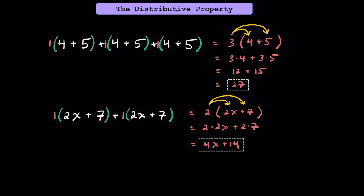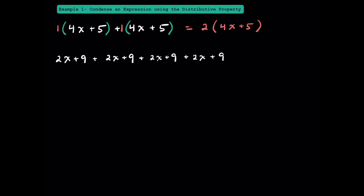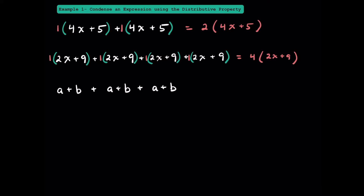Now that you have some background on the distributive property, let's get into some examples. In example 1, we're going to practice condensing expressions. For the first expression, we have 4x plus 5 two times, so using the distributive property we can write 2 times the quantity 4x plus 5. For the next one, we have four of these 2x plus 9s, so we can write 4 times the quantity 2x plus 9. And for the last one, we have 3 of these a plus b's, so we condense it to 3 times the quantity a plus b.